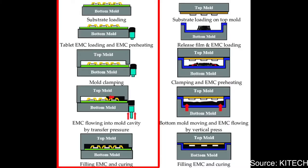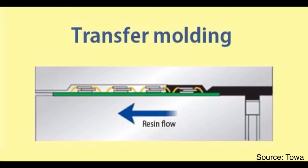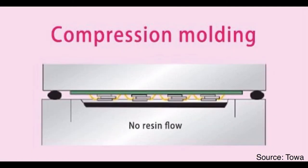There are two major mold processes by process method. One is transfer mold, which I have explained so far, and the other one is compression mold. Transfer mold is the most popular, with simple machine structure and lower cost. Compression mold is used especially when the package structure is prone to voids, and its cost is higher than transfer mold.